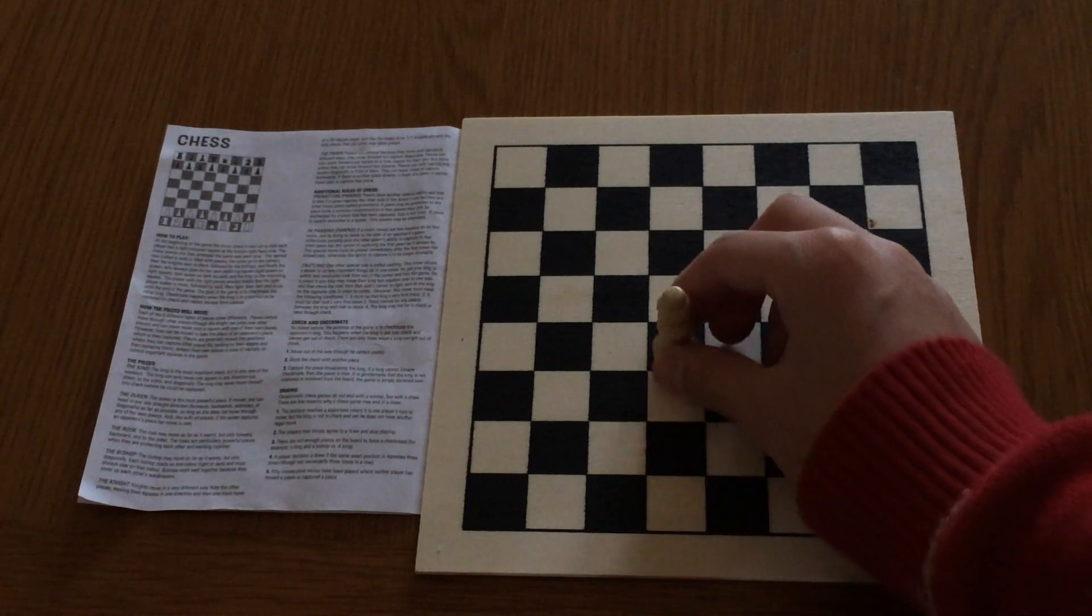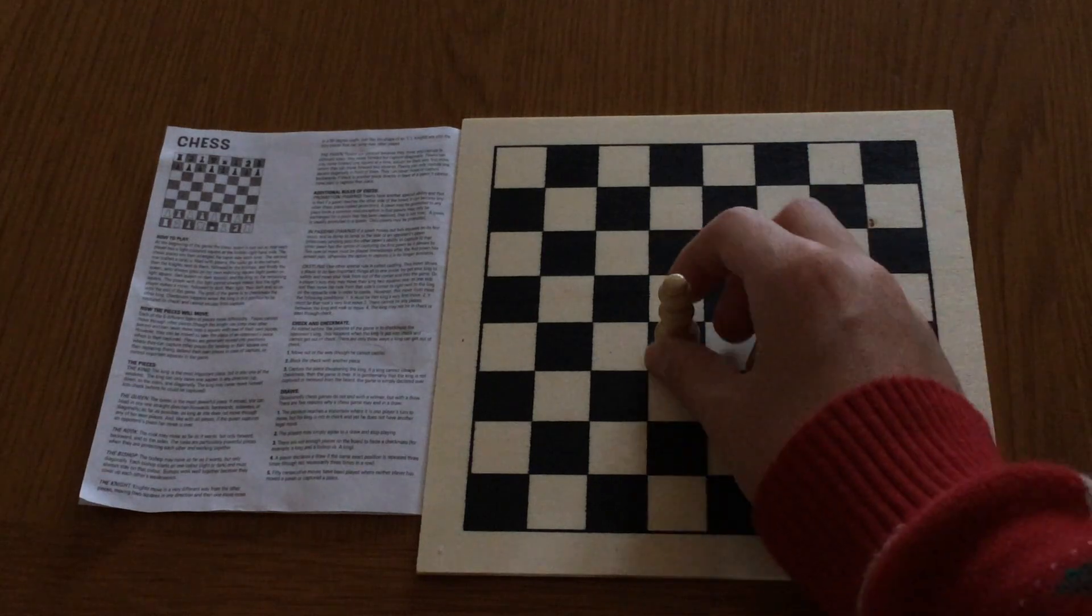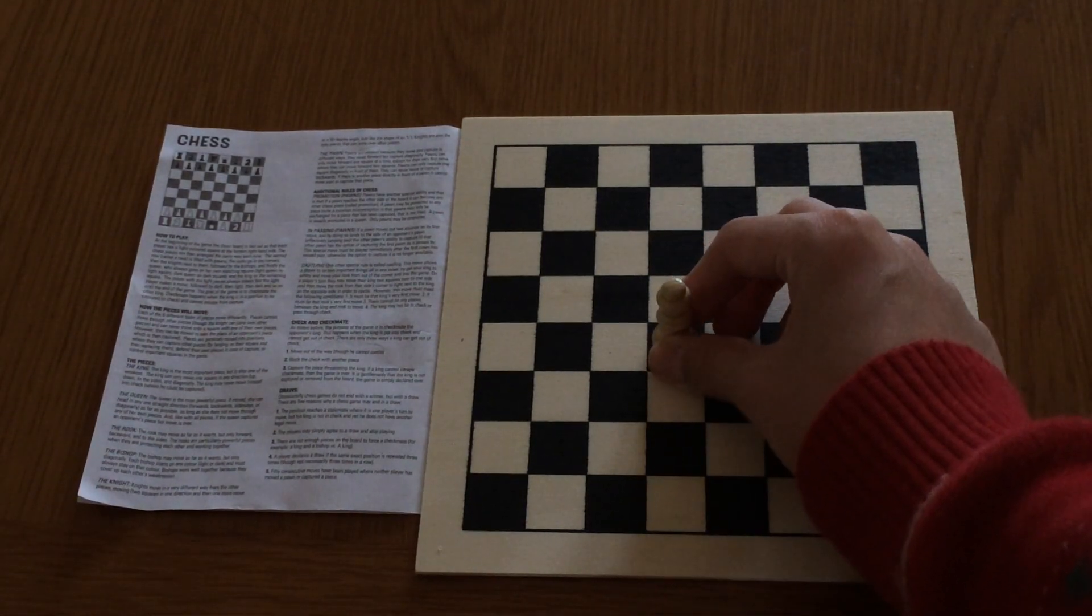That means the Queen takes the most squares if it is in the center of the board, and it controls almost half of the board.